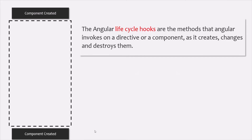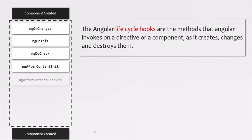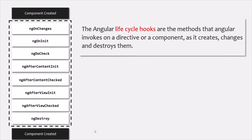Angular lets us know when these events happen using Angular Lifecycle Hooks. We can hook into these phases by implementing methods which Angular will call if they are present in the component class. Angular Lifecycle Hooks are methods that Angular invokes on a directive or component when it creates, changes, or destroys it. These lifecycle hooks are: ngOnChanges, ngOnInit, ngDoCheck, ngAfterContentInit, ngAfterContentChecked, ngAfterViewInit, ngAfterViewChecked, and ngOnDestroy. We are going to talk about each of these in great detail in coming lectures.